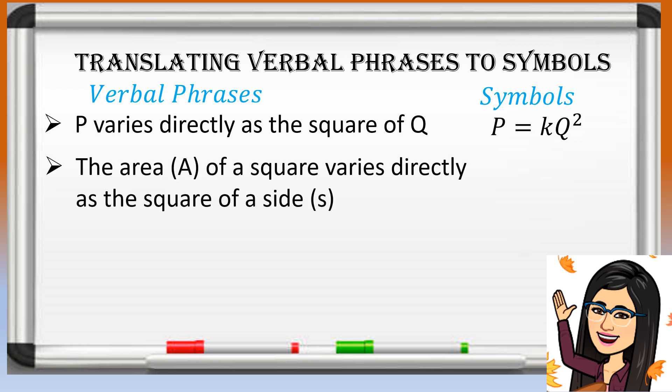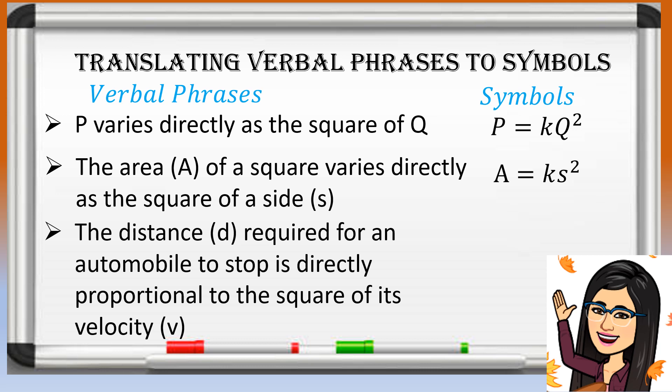Now try this. The area of a square varies directly as the square of a side. Using a for area and s for the side, the symbol will be: a is equal to ks squared. The distance required for an automobile to stop is directly proportional to the square of its velocity. The distance is represented by d and the velocity by v, so the symbol is d is equal to kv squared.